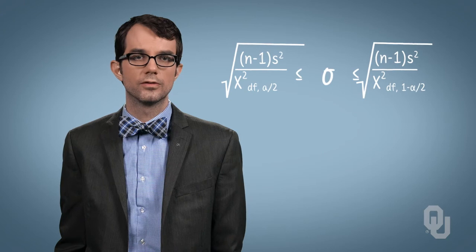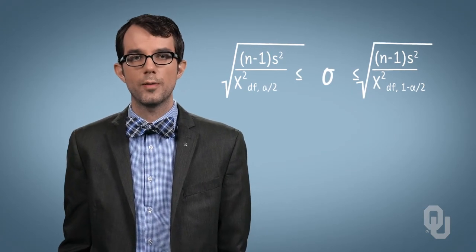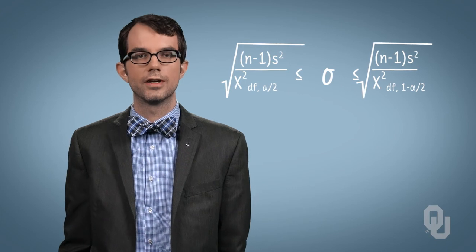As variance is sometimes less intuitive than standard deviation, we can simply take the square root of both bounds to find a one minus alpha times one hundred percent confidence interval for the population standard deviation, as you see on the screen.